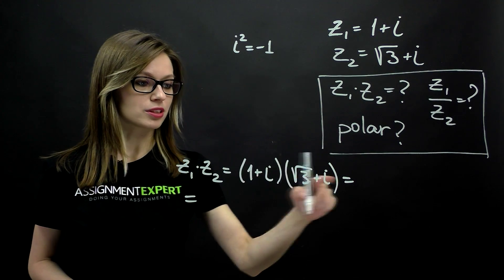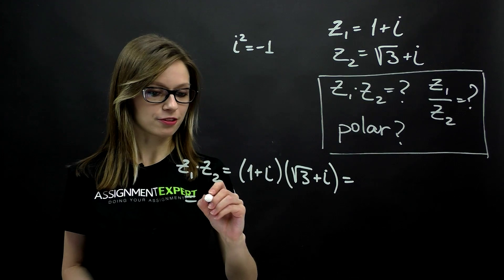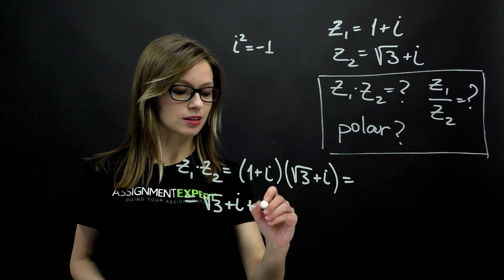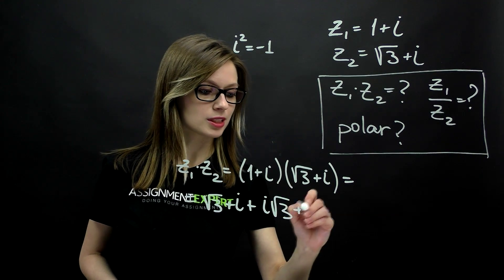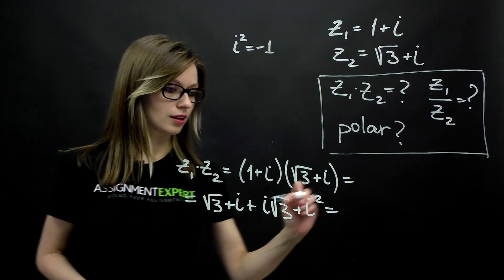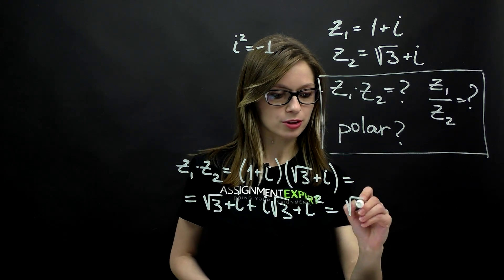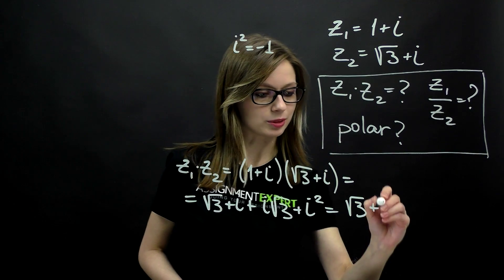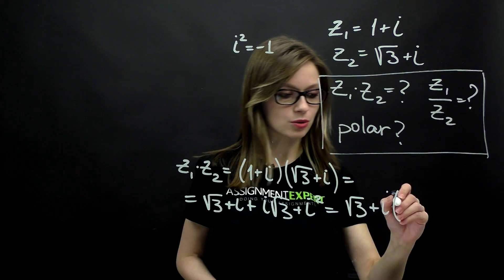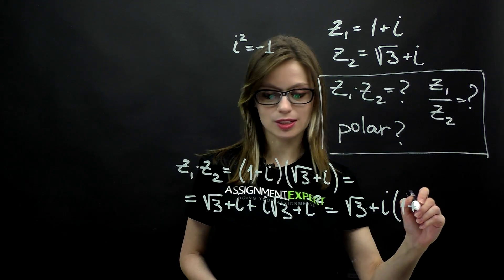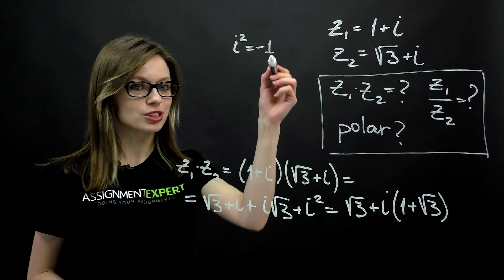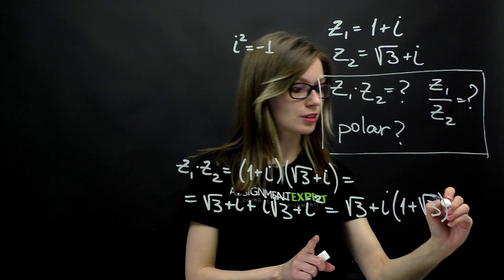Now let's open the parentheses and we'll have square root of 3 plus i plus i times square root of 3 plus i squared. i can be factored out, so we get i multiplied by 1 plus square root of 3. And then i squared is equal to negative 1, so we put negative 1.